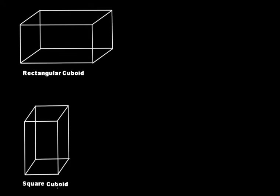This is a rectangular cuboid and this is a square cuboid. What's the difference? In the case of the rectangular cuboid, all the six faces are of the rectangular shape. But in the case of the square cuboid, the top face and the bottom face are of the square shape — the rest are rectangular. Therefore, we call it a square cuboid. If all the faces are rectangular, the cuboid is called a rectangular cuboid. We'll limit our discussion to rectangular cuboids only.